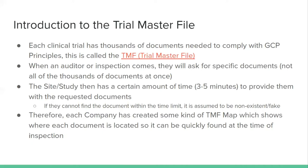There's no set amount of documents — it's not like there are 584 and you're just checking for those, because it varies from each site and each study. When an auditor or inspector comes, they will ask for specific documents, and usually they'll ask for access to the system since a lot of things are done digitally. They want to be able to prove that you can produce these documents — ideally within about three to five minutes, though the idea is there are multiple requests coming in and you need to produce them quickly.